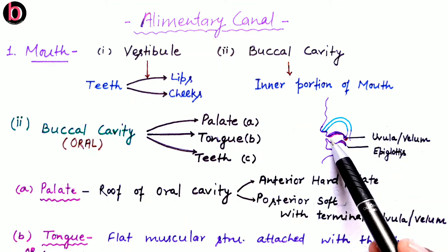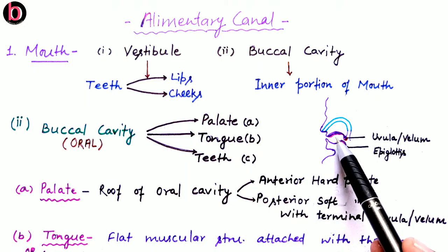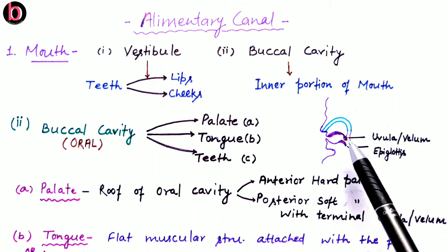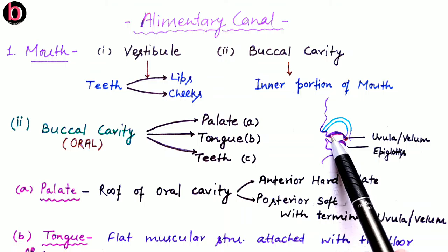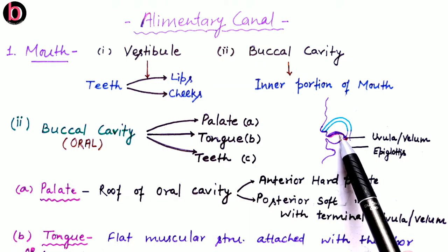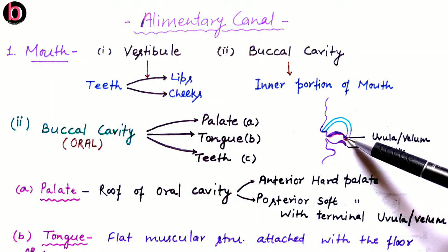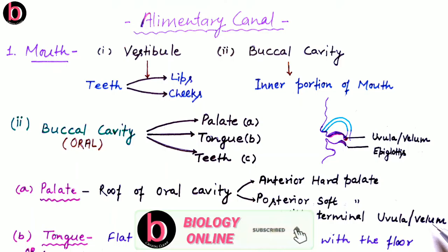The posterior terminal end of the soft palate is a hanging structure known as the uvula or velum. In the diagram you can see the lips, and the inner portion shows the anterior part of the palate, which is the roof of the oral cavity. This anterior part is hard and rough and is for making a strong grip over the food material we consume. The posterior portion is comparatively soft.